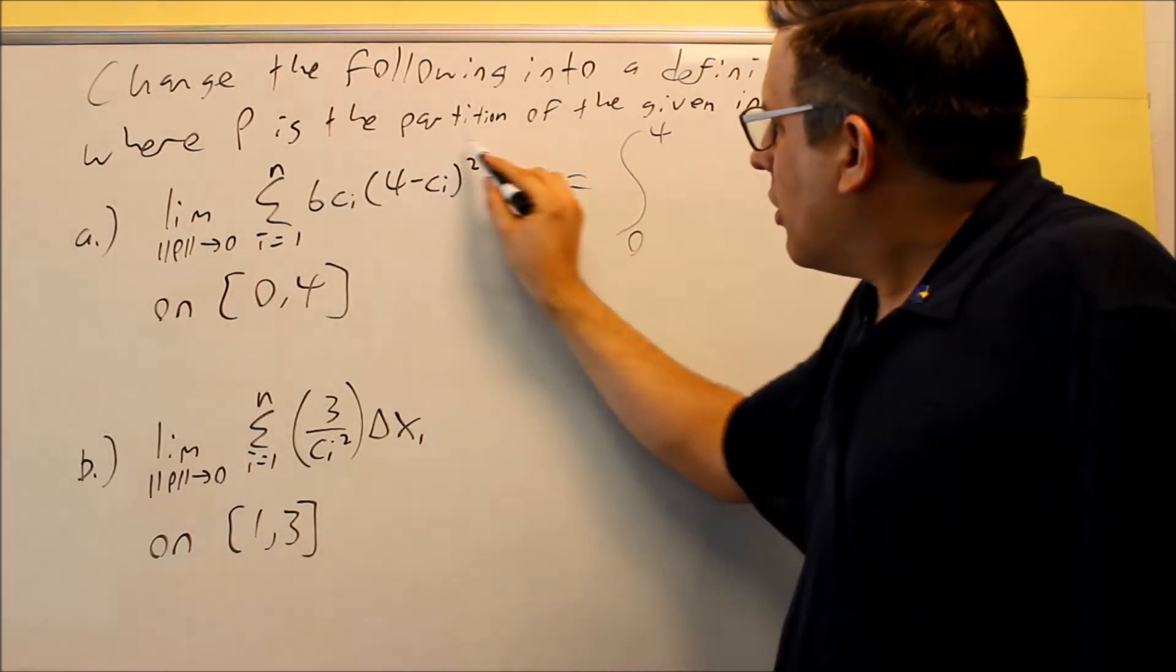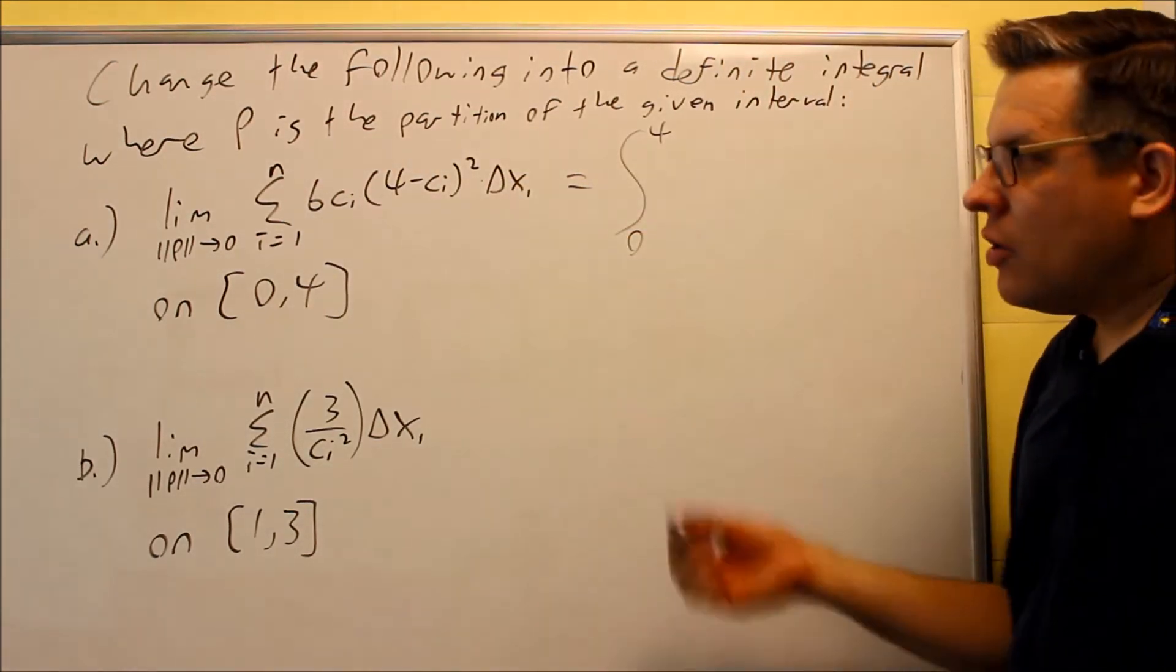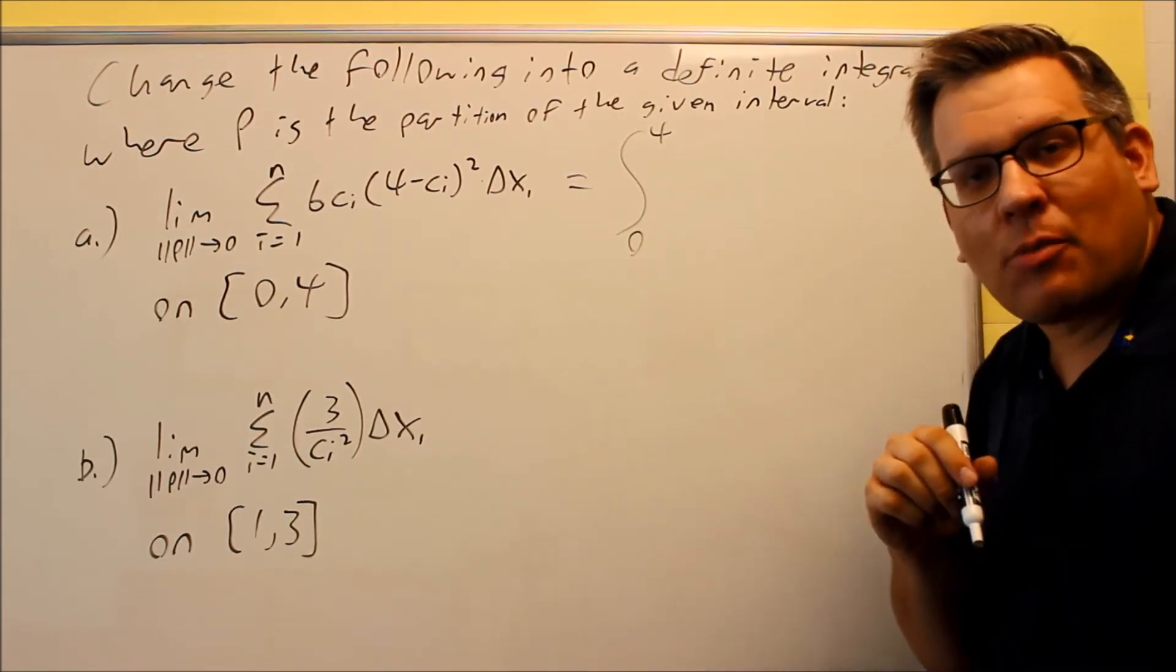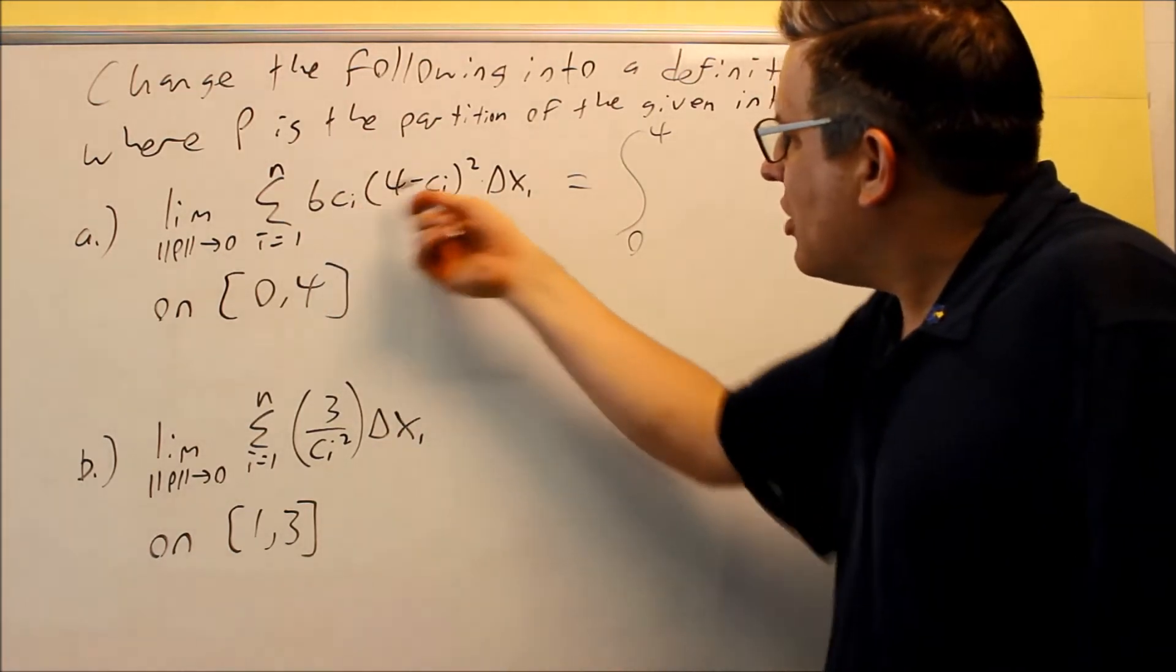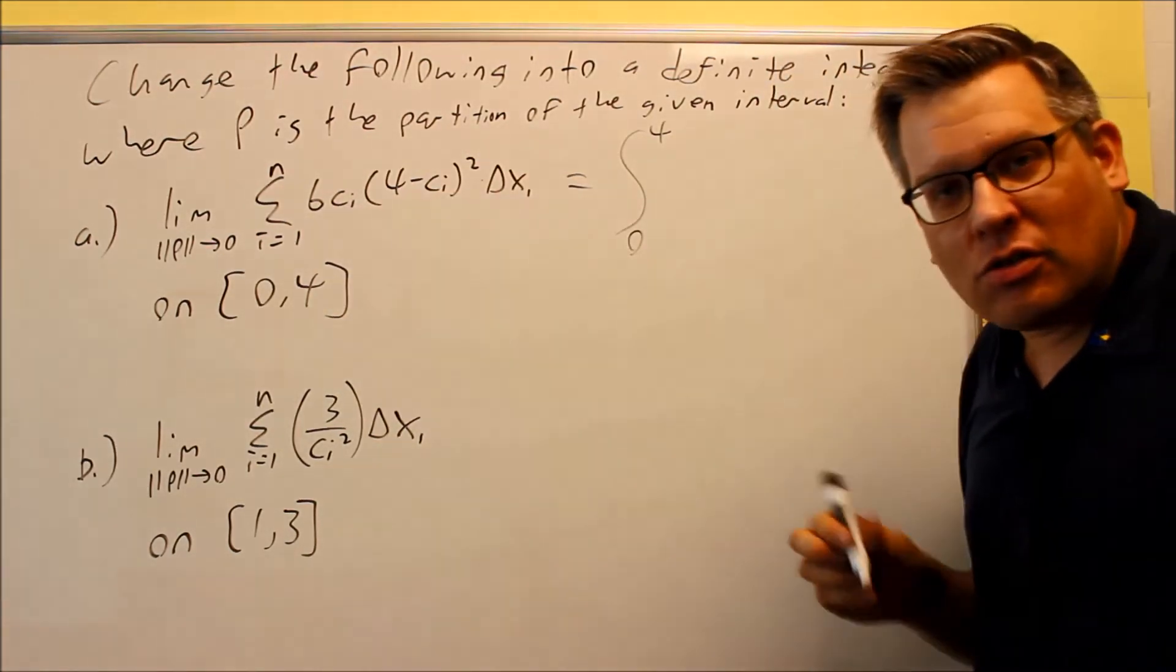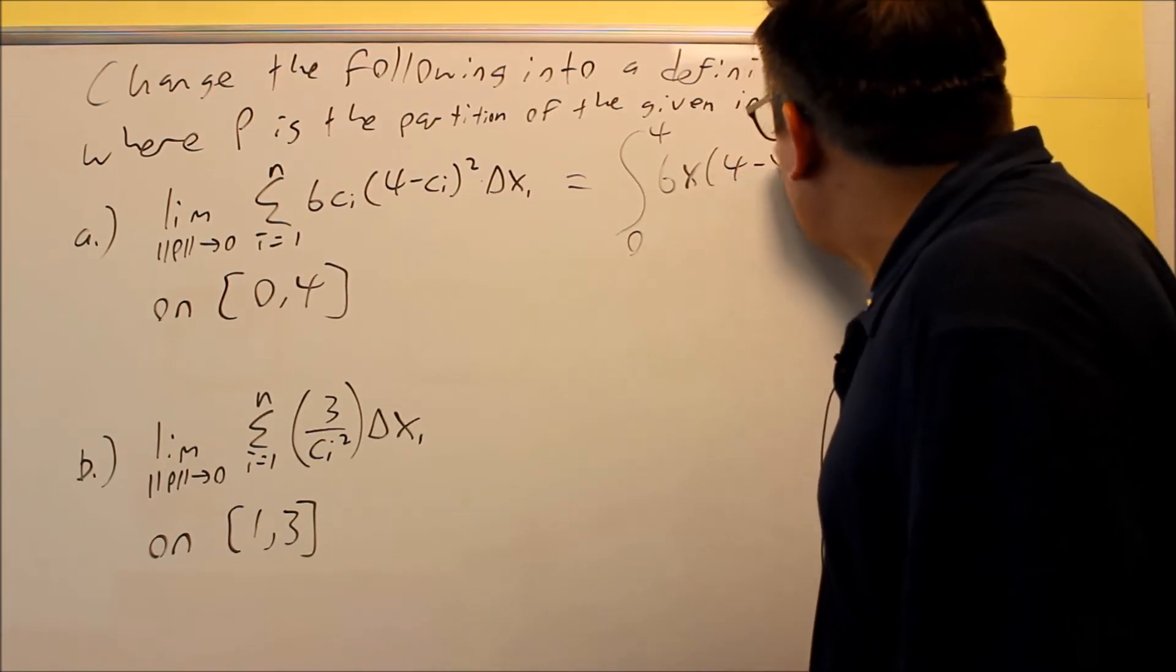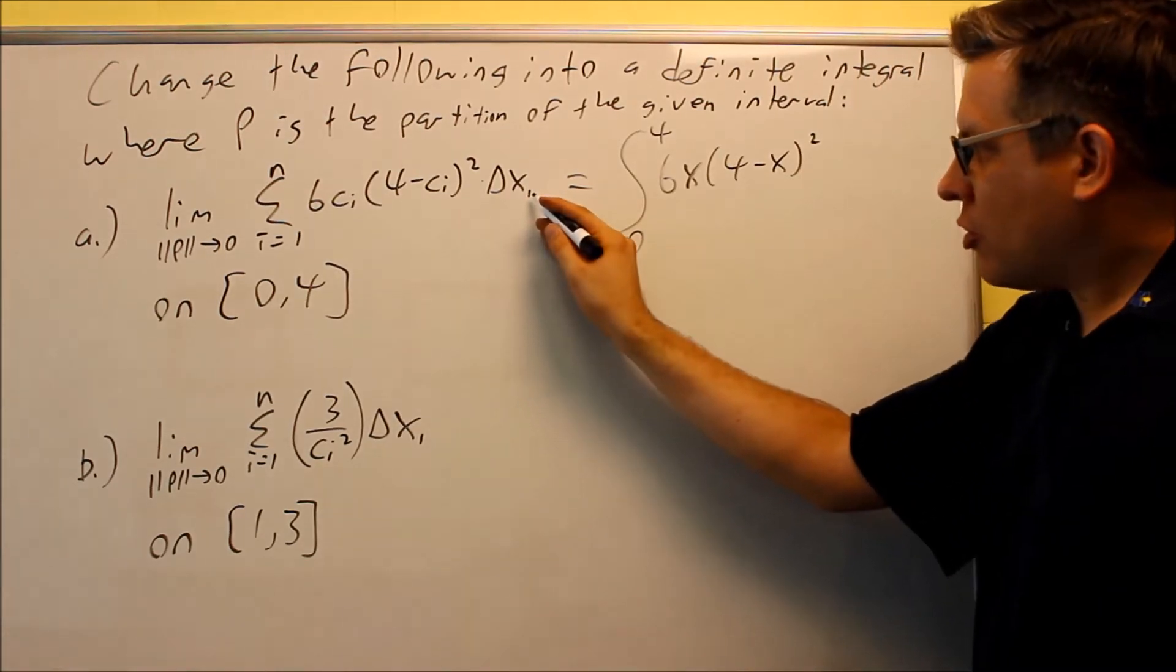Now this right here is going to be turned into your f of x. When we talked about before, normally you would put a c_i in for x. Well, this time we're going to remove the c_i and put an x back in. So any place where we see c_i, we're going to turn that back into an x. Six x, and then we do four minus x squared, then delta x. There's a little one down below, you may or may not see that depending on what book that you're using.